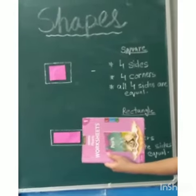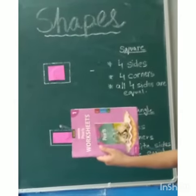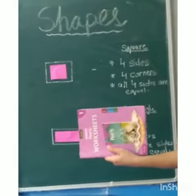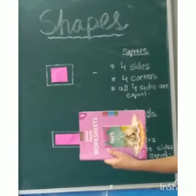Here you can see there are two long sides and two short sides. The opposite sides of a rectangle are equal.